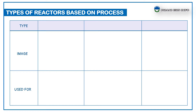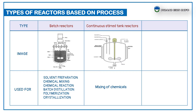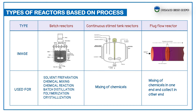Based on process, there are three types of reactors: batch reactors, continuous stirred tank reactors, and plug flow reactors. Batch reactors are used for solvent preparation, chemical mixing, chemical reactions, distillation, polymerization, and crystallization. Continuous stirred tank reactors are used for mixing of chemicals, generally used for wastewater treatment. Plug flow reactors have chemical mixing at one end and collection at the other end.